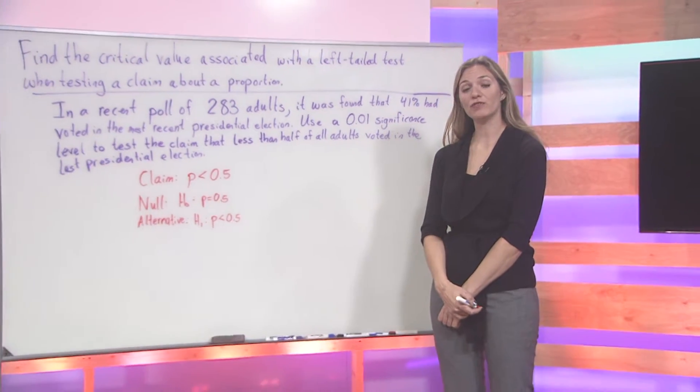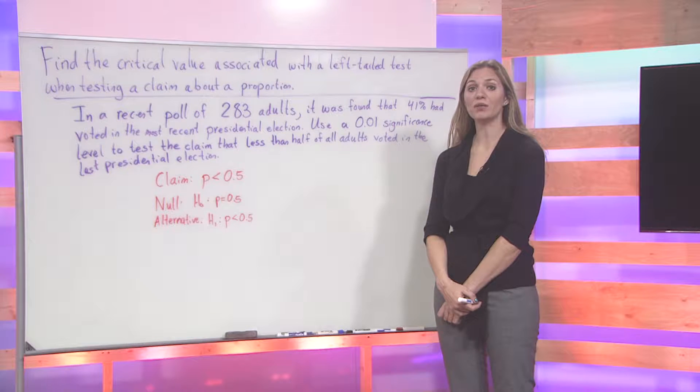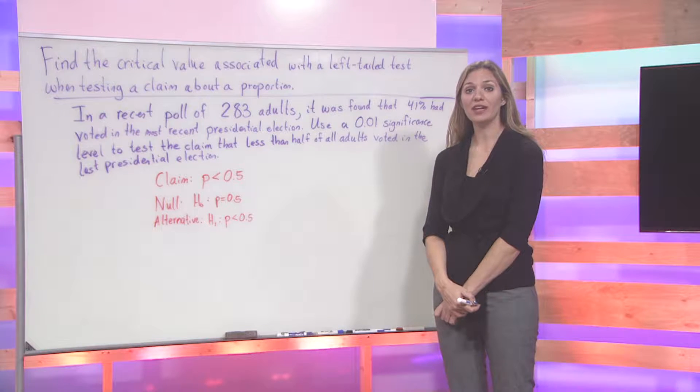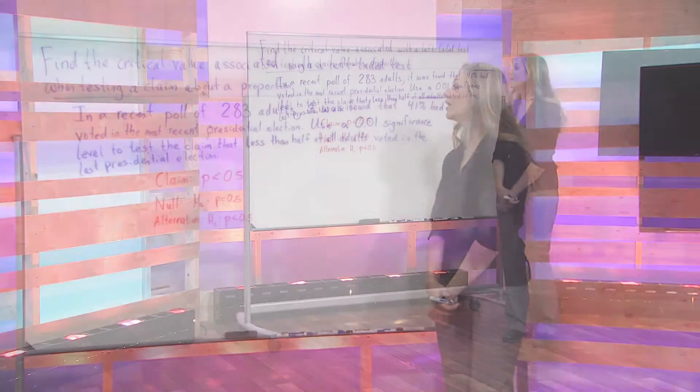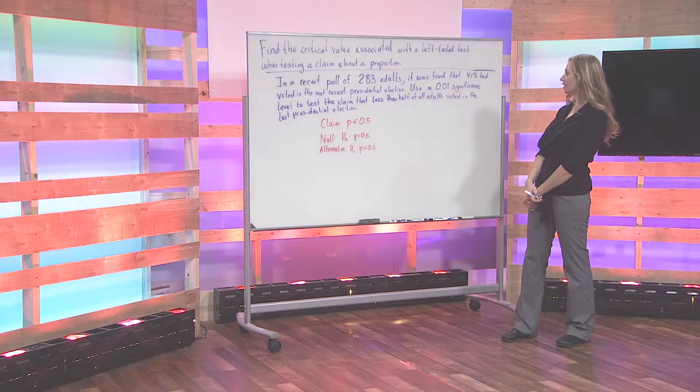In this exercise, we are going to find the critical value associated with a left-tailed test when we are testing a claim about a proportion. In a recent poll of 283 adults,